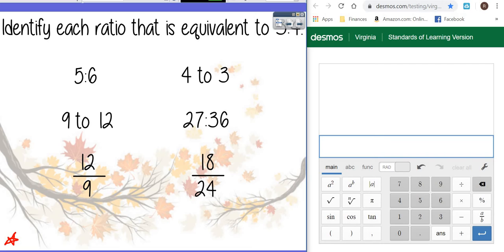It's saying identify each ratio that is equivalent which means equal to three to four and what I would do is I would make them all into fractions. So I'm going to start with three to four. So I'm going to put three divided by four that gives me point seven five.